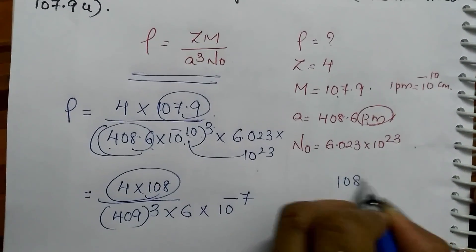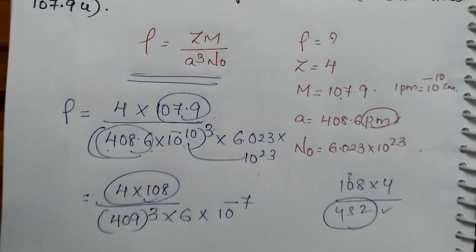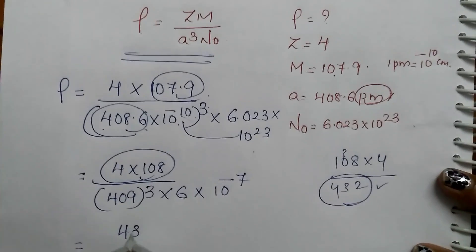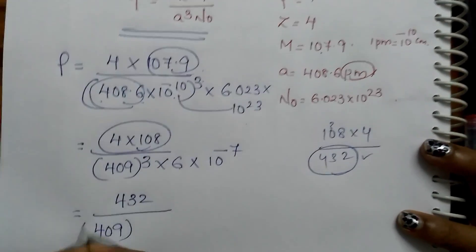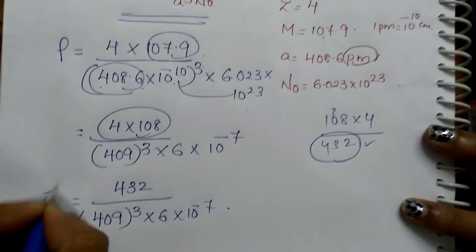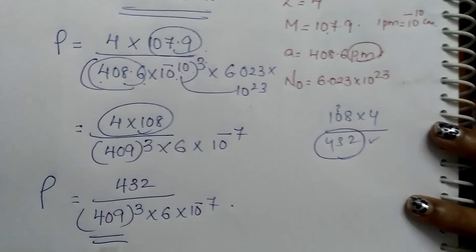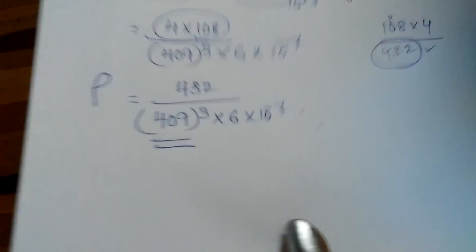Now you need to compute 409 whole cube. Set it up — we have 432 in the numerator and 409³ × 6 × 10⁻⁷ in the denominator. Solve it by first squaring 409, then multiplying by 409 again.